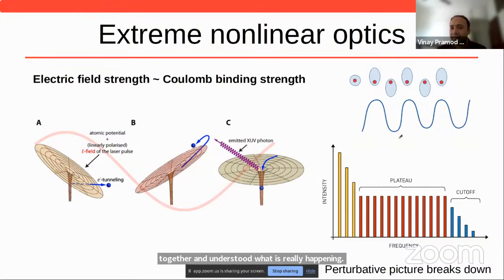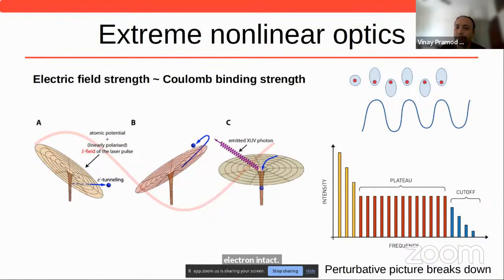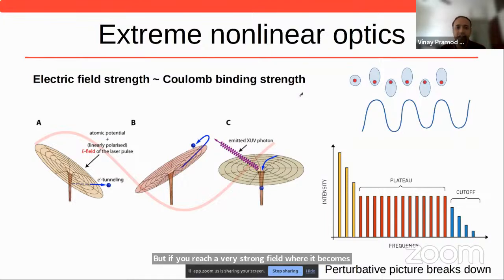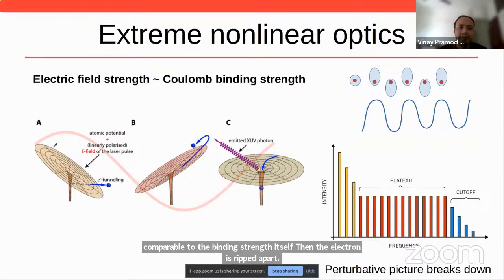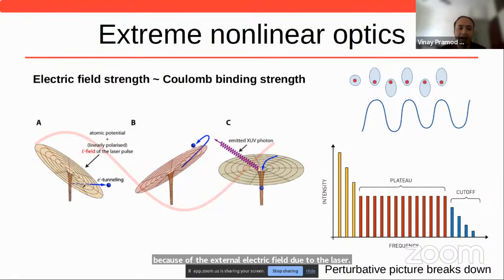If you keep shining stronger and stronger fields and reach a certain field strength comparable to the Coulomb binding strength, the electron is ripped apart. In the simple hydrogen atom, a weak field creates polarization and the electron and proton remain bound. But at a very strong field comparable to the binding strength itself, the electron is ripped apart — you see the Coulomb potential getting severely distorted by the external laser electric field. This leads to what is called tunnel ionization: the electron is ripped apart through a tunneling mechanism.